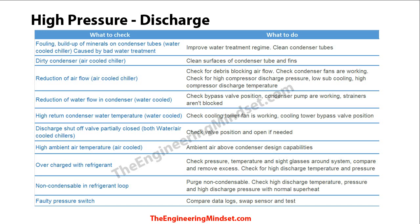You may also get a high pressure discharge fault due to reduced water flow through the condenser. Check all valves, strainers, and pumps to make sure they're operating at the correct flow rate. If you're unsure what the flow rate should be, refer to the commissioning data from when the chiller was installed — it will state the required flow rates through the pipework.